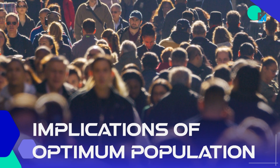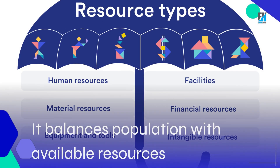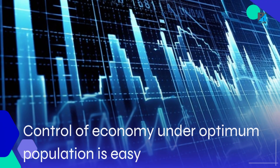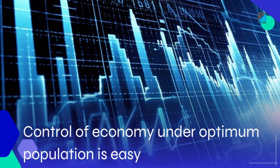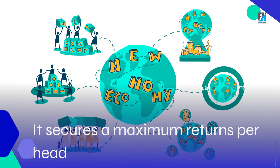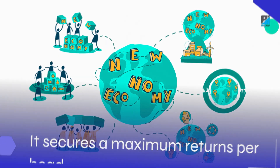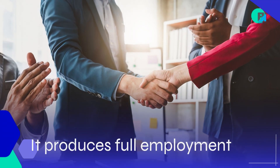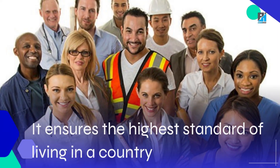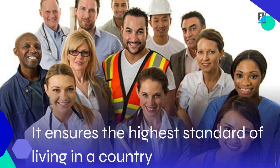The implications of optimum population: it balances population with available resources; control of the economy under optimum population is easy; it secures maximum returns per head; it produces full employment; and it ensures the highest standard of living in a country.